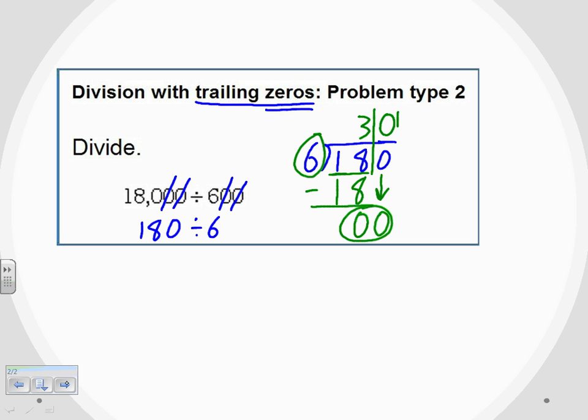Again, I'm lined up nicely on that right-hand side. This is 0 at the top times the 6 out in front. 0 times 6 is 0. And when I subtract once again, 0 minus 0 gives me 0.